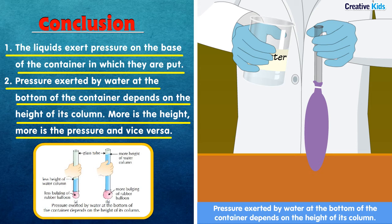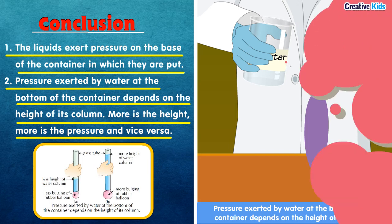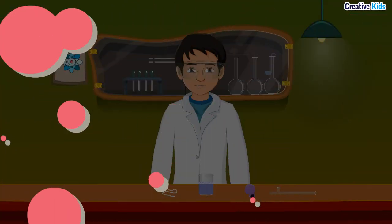This activity shows two conclusions: one, the liquid exerts pressure at the base of the container; and two, the pressure exerted by water at the bottom of the container depends on the height of the column.